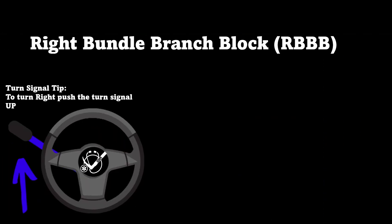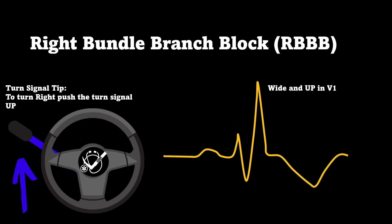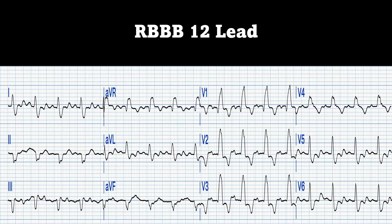Same thing with your right bundle branch block — if you want to turn right, you lift the turn signal up. So the QRS complex in V1 for a right bundle branch block will be up and wide. Look in V1: if it's wide and up, it's a right bundle branch block; if it's wide and down, it's a left bundle branch block. Here's a 12-lead example — in V1 you see a wide QRS mostly pointing up, confirming right bundle branch block morphology. In the limb leads, you can also notice a left anterior fascicular block.